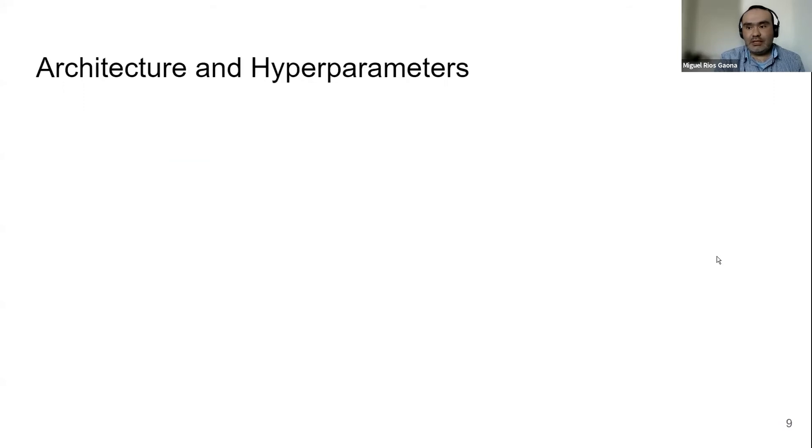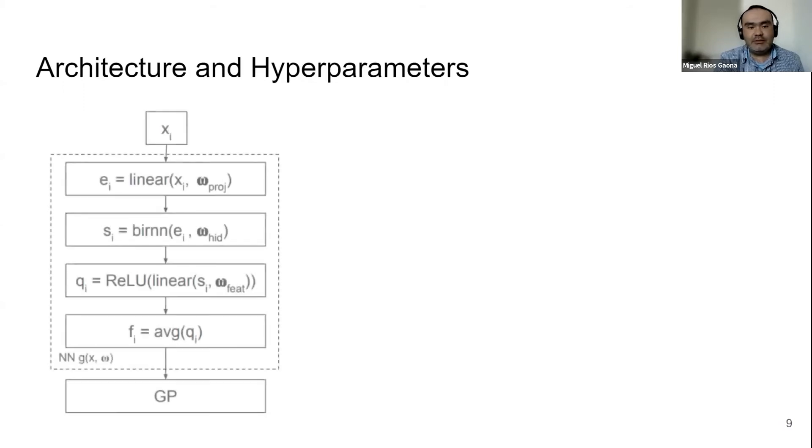Let's have a look at our architecture and hyperparameters that we use for deep kernel learning. The deep kernel learning first needs a neural network architecture that is going to give you features or representations for the GP. First of all, for each input, we are going to project into a linear layer.